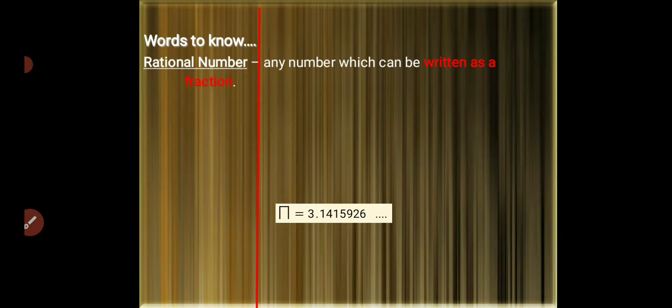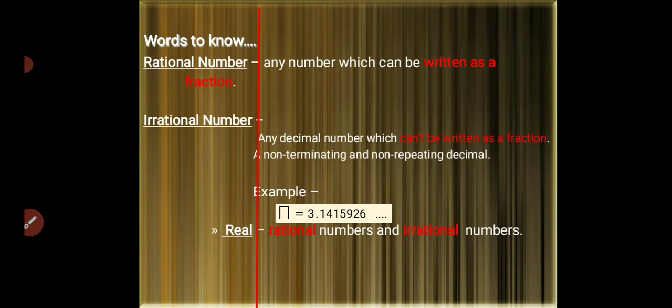Rational numbers are any numbers which can be written as a fraction. Irrational numbers are any decimal numbers which cannot be written as a fraction, a non-terminating and non-repeating decimal. Example: π = 3.1415926 and so on.